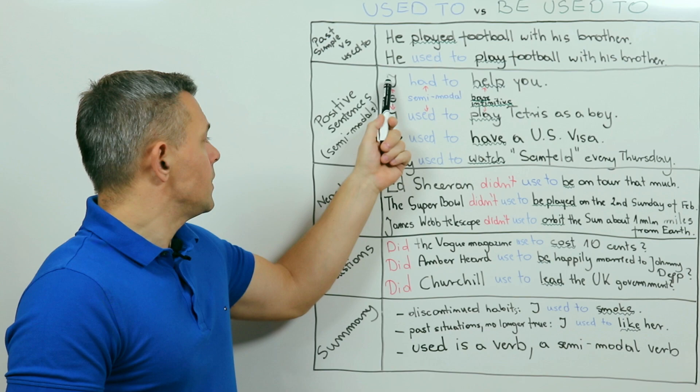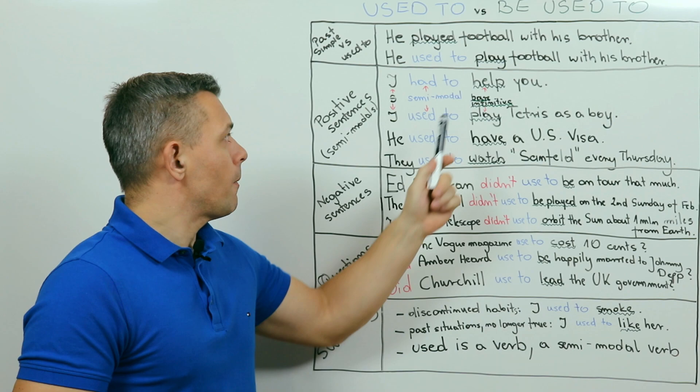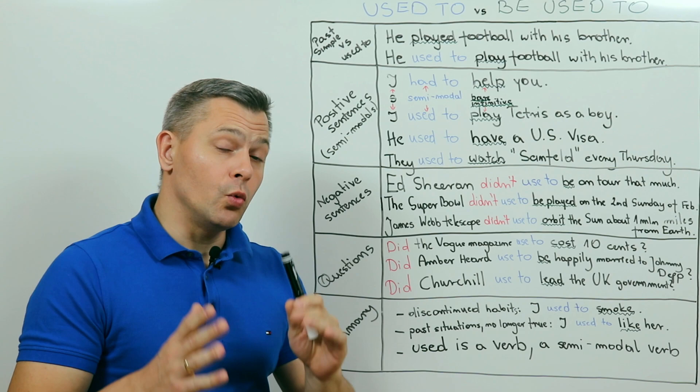So, subject, verb number one, semi-modal used to, and then verb number two is in its bare infinitive form. So, the one without the to. And voila.